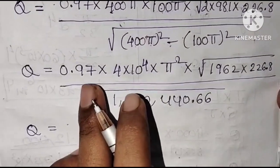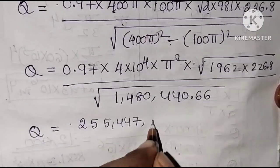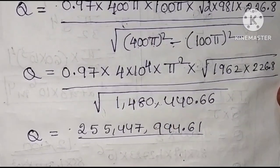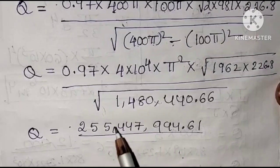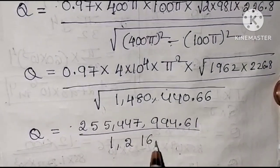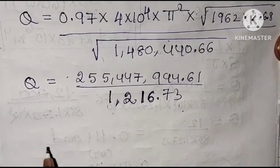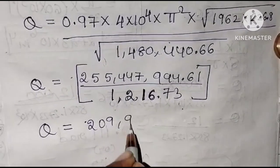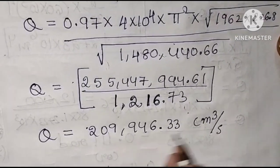Performing the final calculation, Q is approximately 209,946.33 cubic centimeters per second.